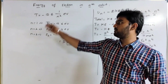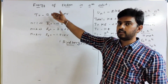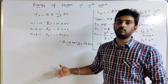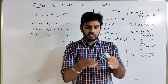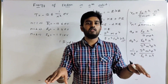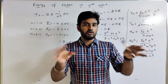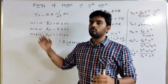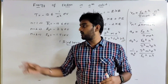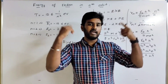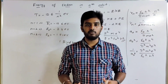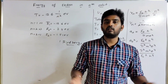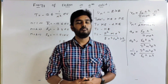So we can see how the energy levels increase with orbit number. The lowest energy corresponds to the first state, which is the ground state. n equals 2 is the first excited state, n equals 3 is the second excited state, and so on.